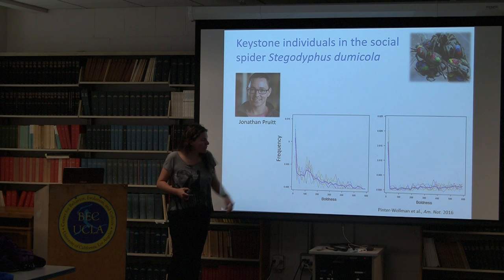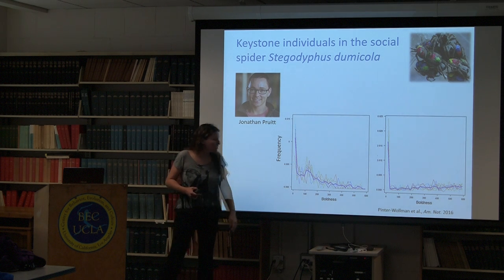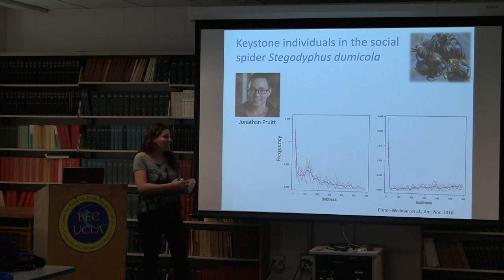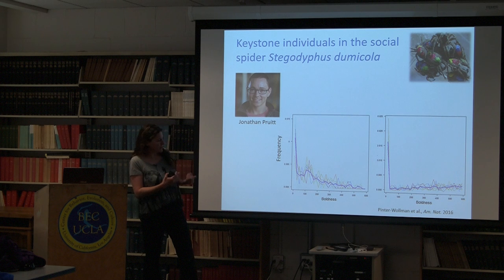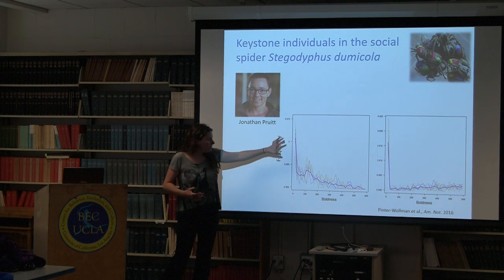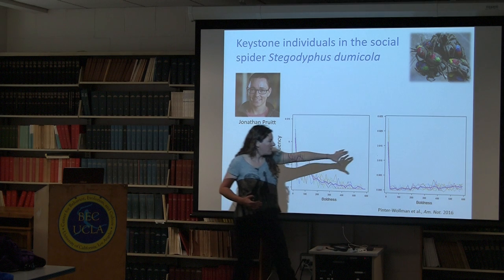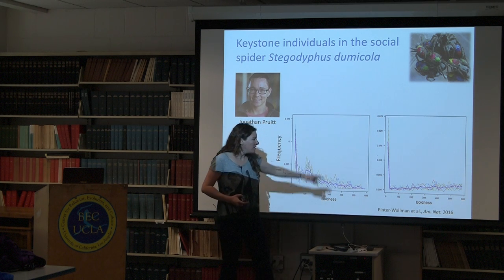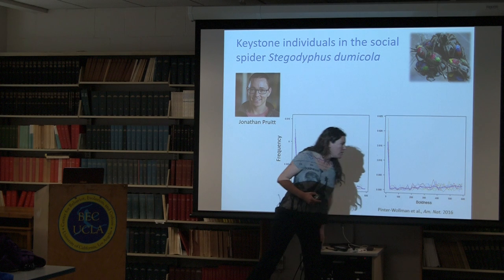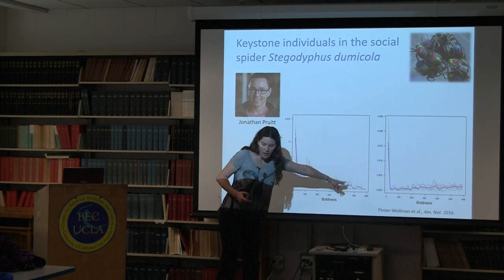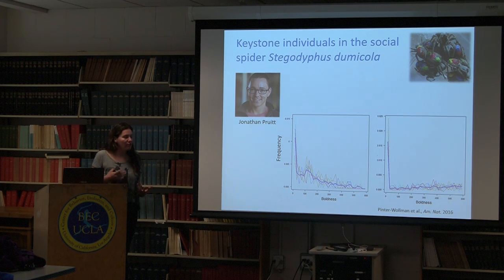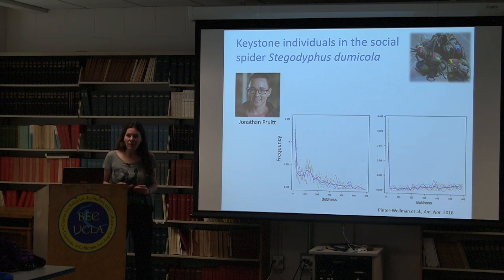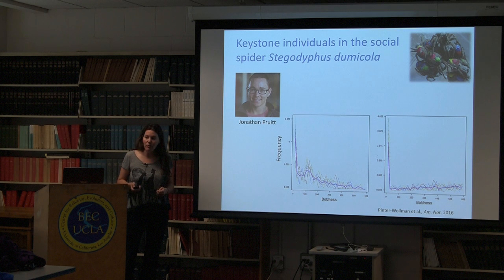We puff air on them and wait up to 10 minutes to see how quickly they start crawling around again. These are examples of colonies in the field - each dashed line is a different colony. What we usually see is a lot of shy individuals, and sometimes a bimodal distribution with a few more bold individuals. Most individuals are shy and few are bold. This influences their collective behavior - how they collectively capture prey.